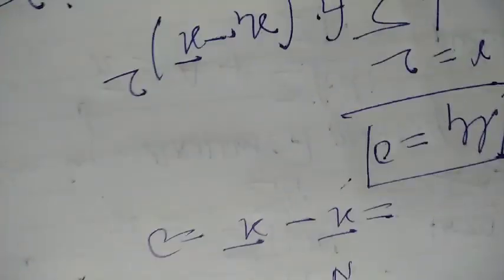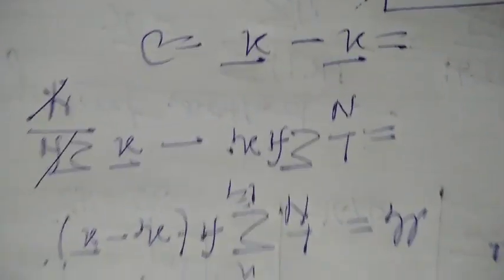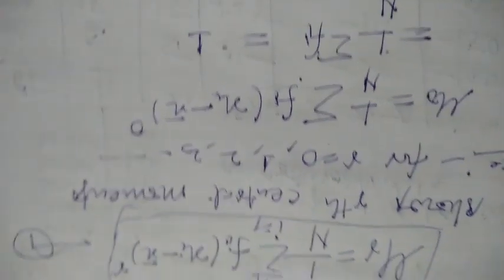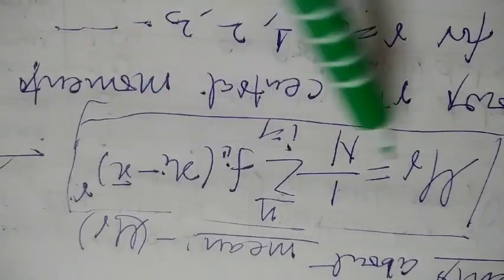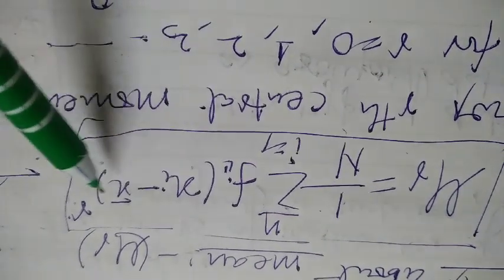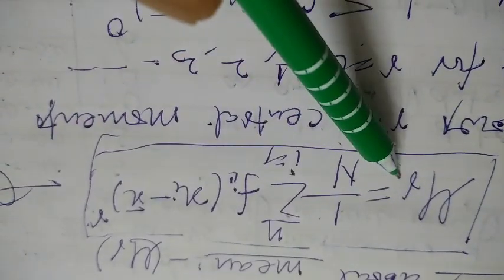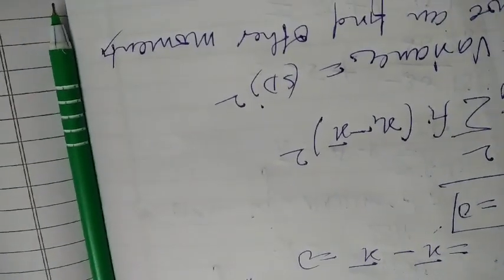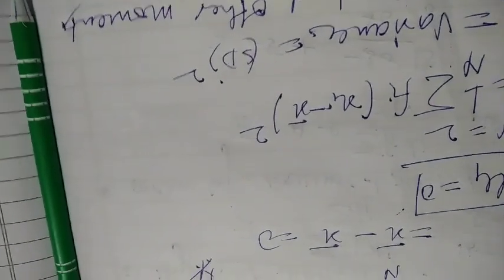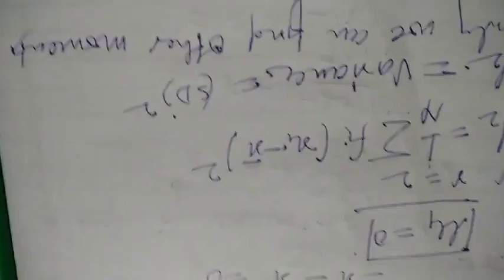So students, this video lecture you have seen central moment defined by this formula: mu r is equal to 1 by n summation Fi (Xi minus X bar) to the power r. And by putting the different values of r, we will find the different moments as such follows. Next video, we'll discuss raw moment or moment about origin. Thank you.